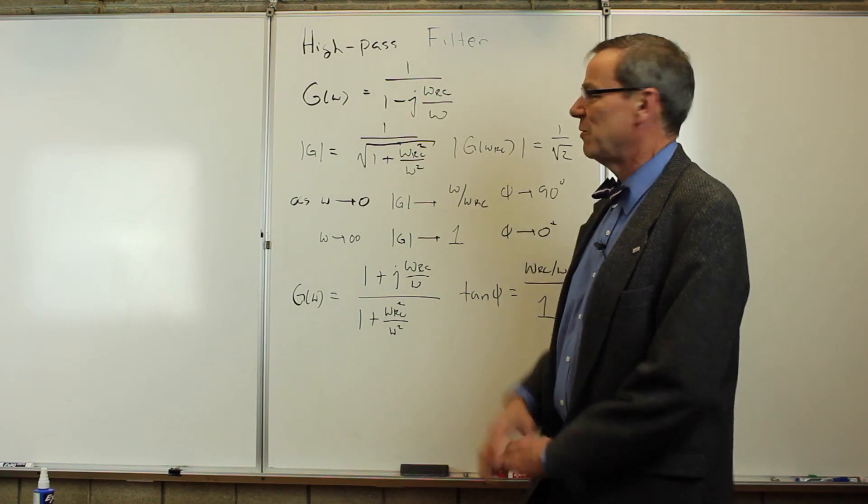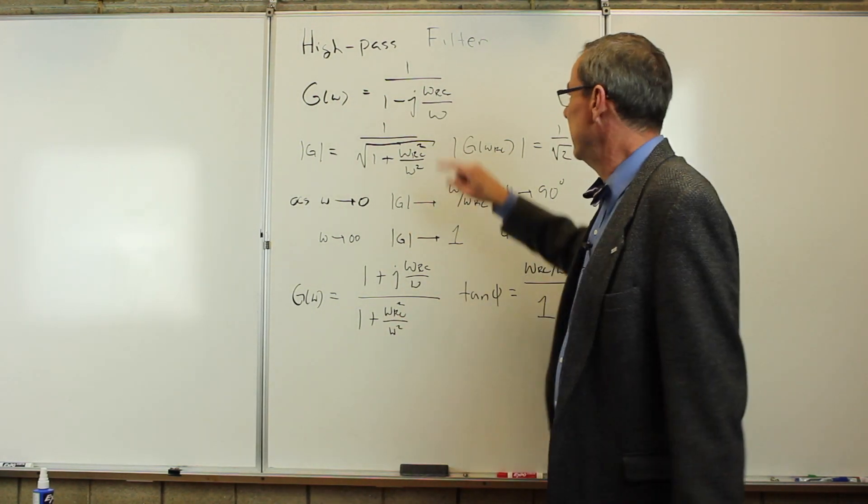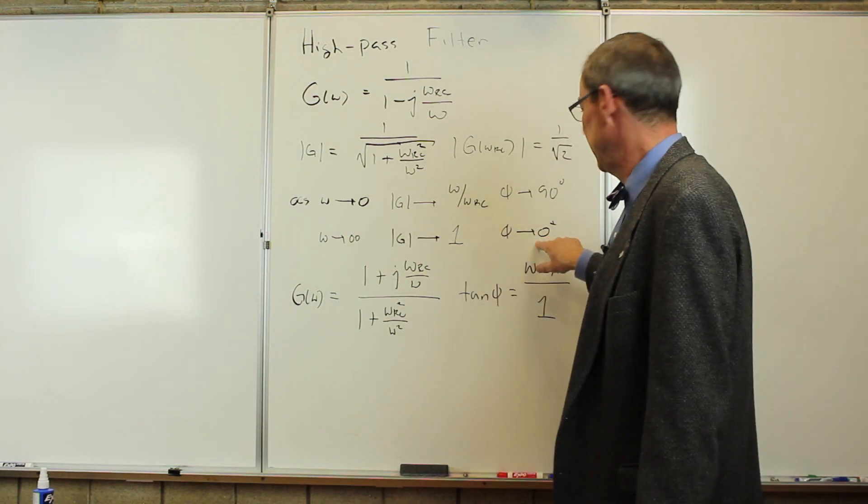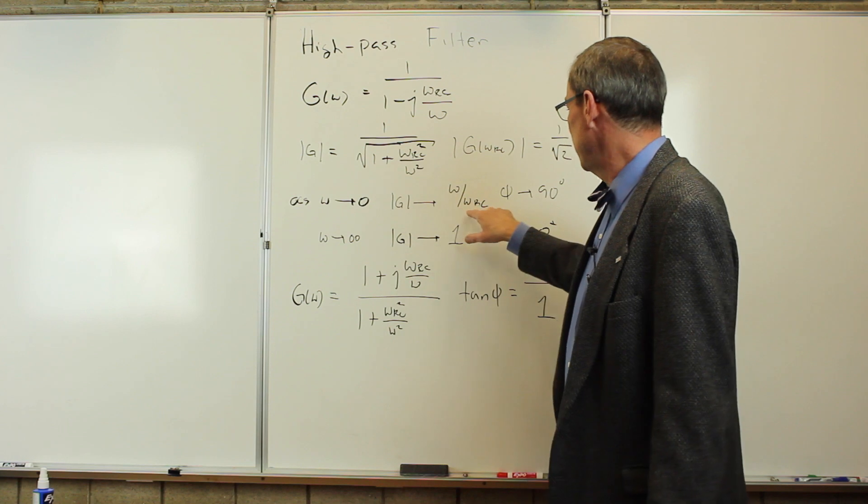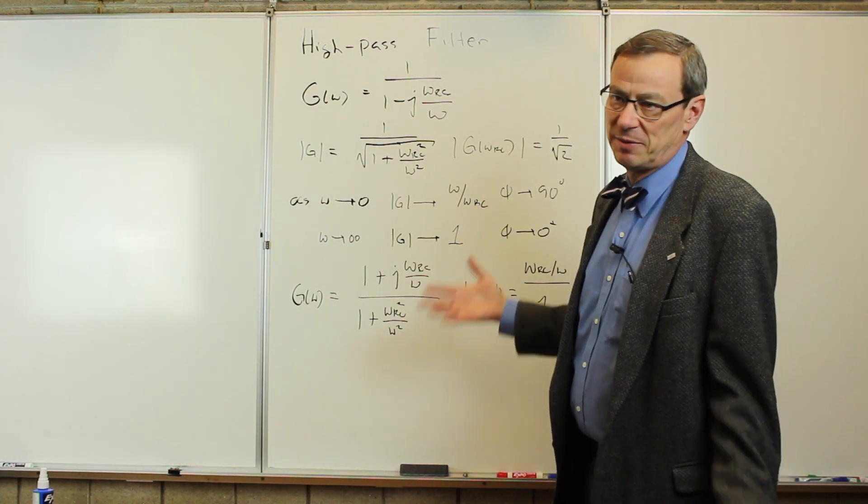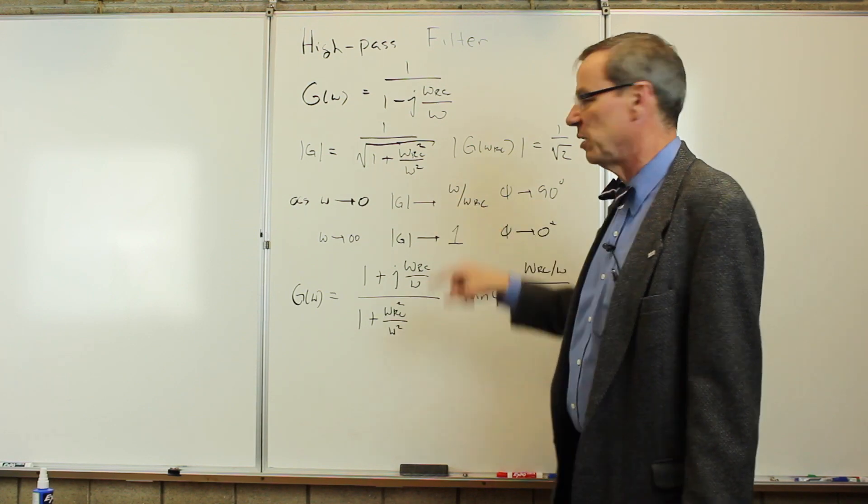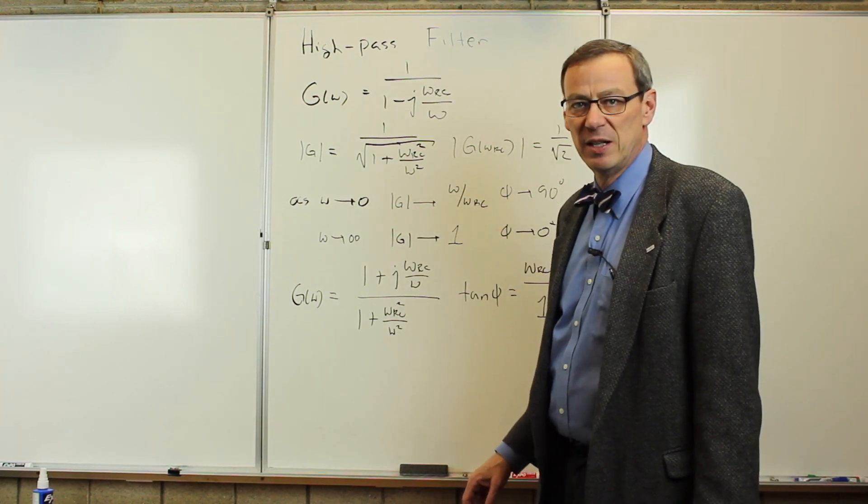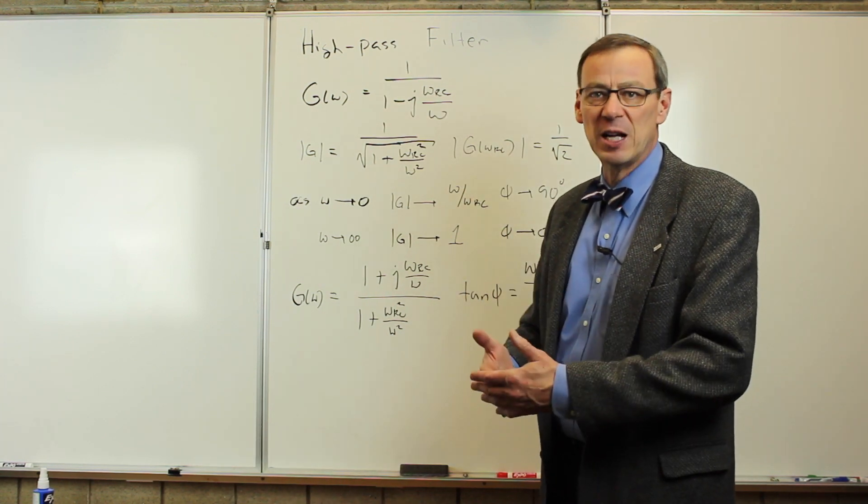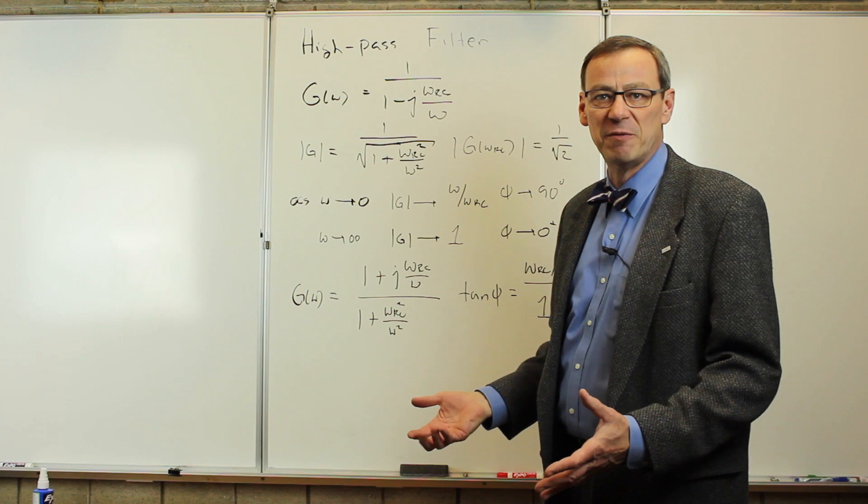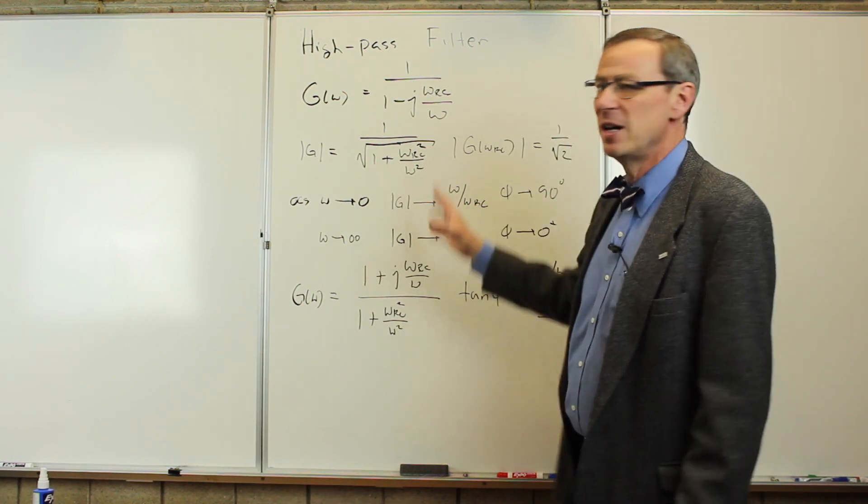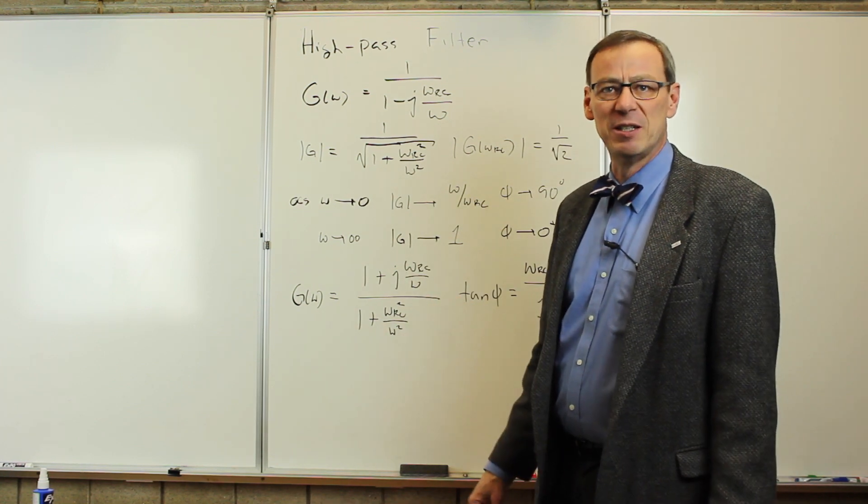So the high-pass filter is pretty much just the opposite of the low-pass filter. It lets through high frequencies unattenuated and it doesn't change the phase. Low frequencies, it attenuates them. They fall off with frequency, just sort of like the low-pass did, and the phase goes to 90 degrees at very low frequencies. So one of these lets through high frequencies, cuts low frequencies off. The other lets through low frequencies, cuts high frequencies off. And the other interesting thing is they both have the same input and output impedance because they have the same two components in the circuits.